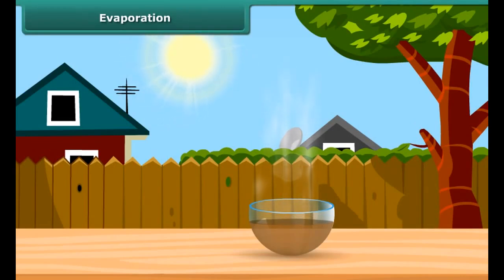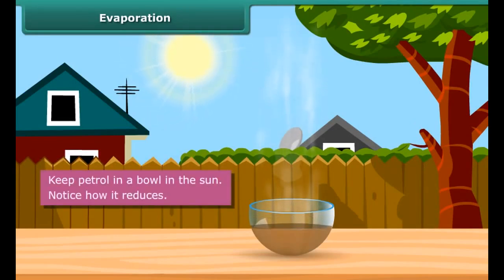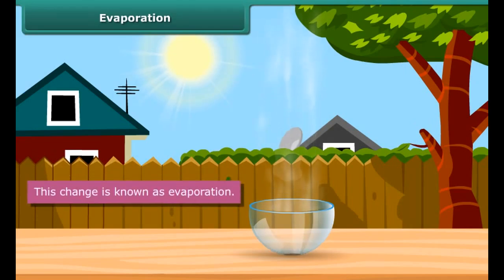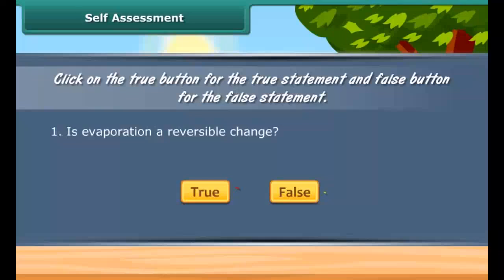Evaporation. What happens when you keep some petrol in a bowl in the sun? After some time, you see that the petrol starts reducing. This is an example of change known as evaporation.